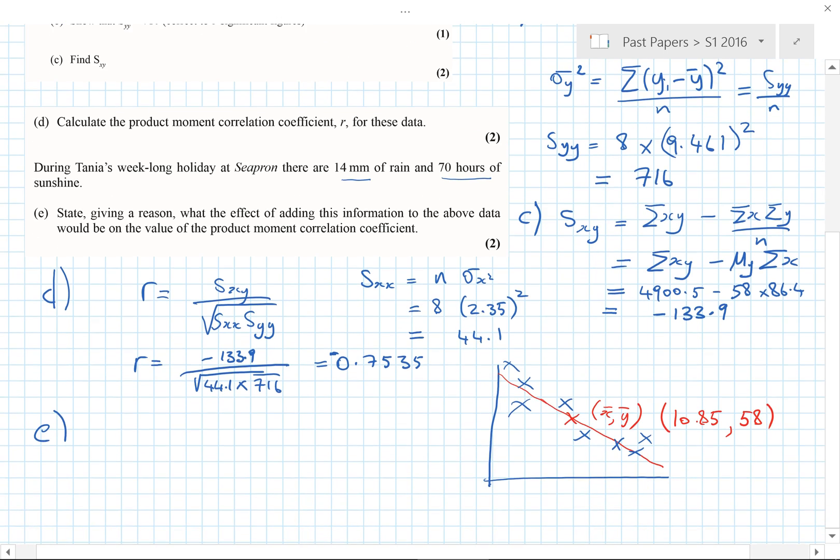And we know that x bar, y bar here in this case is going to be x bar is 10.85 and y bar is given as 58. Now, why have I done this? It helps to explain really what the effect of this extra value is. We should know really that the regression line goes through the mean point. Big fact that we don't often emphasize enough really. That regression line will go through the mean point of the two bits of data.